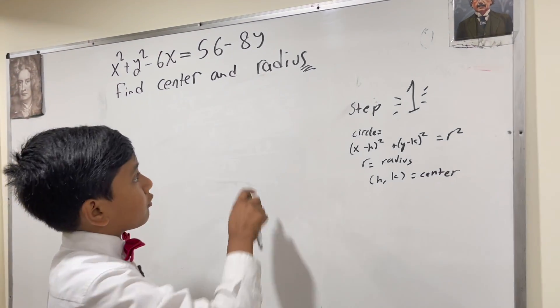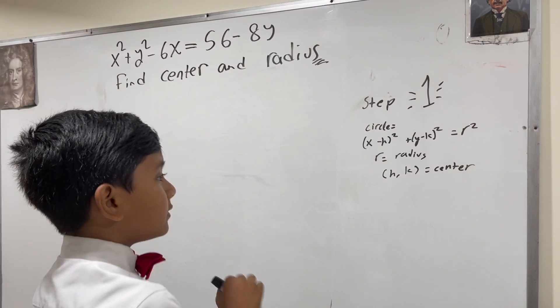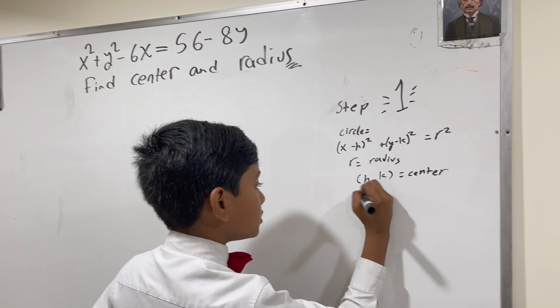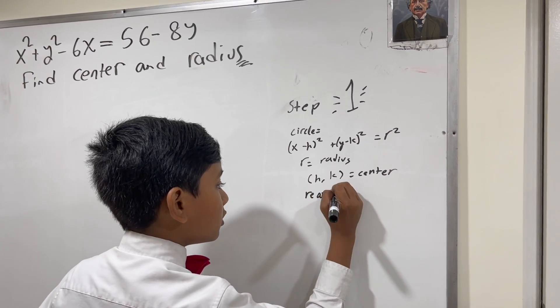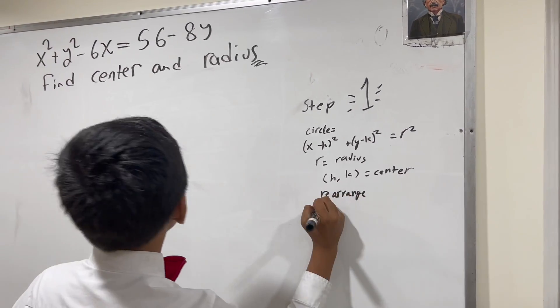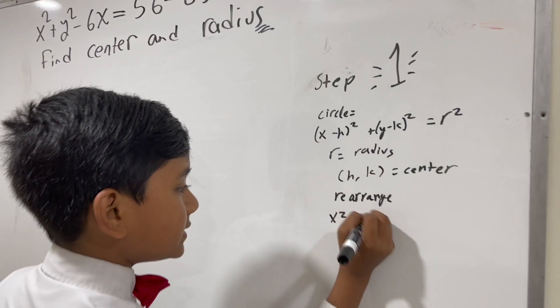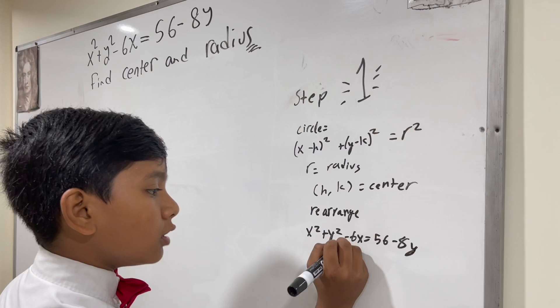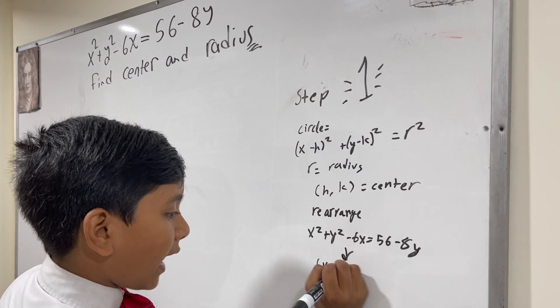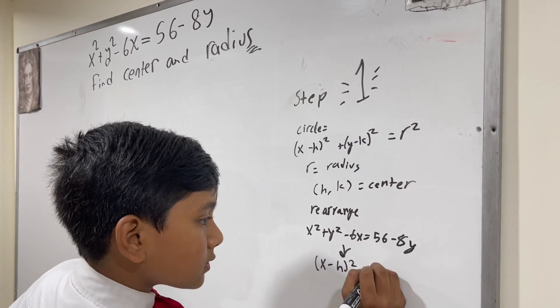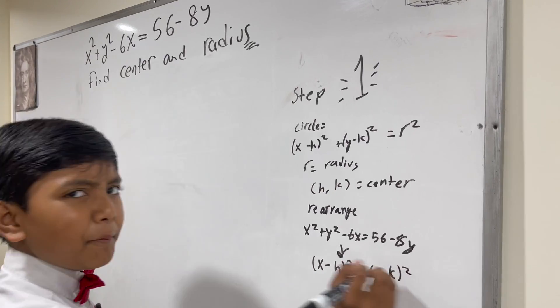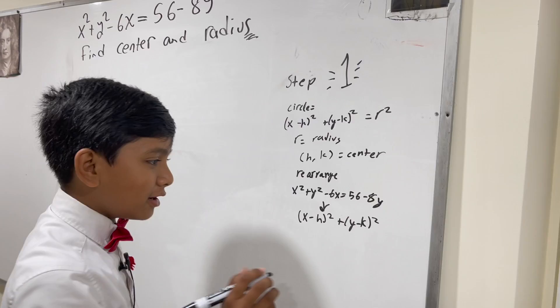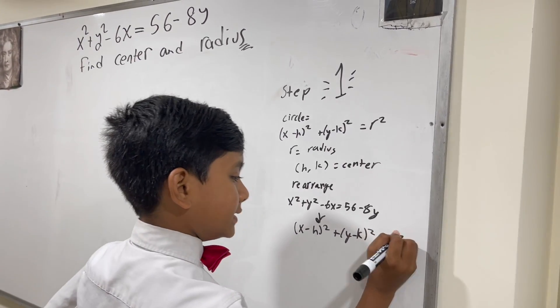So, we need to rearrange this equation to look like that. We have to rearrange this thing to look like that. And now, you might be thinking, but Chiborno, how do we do that?